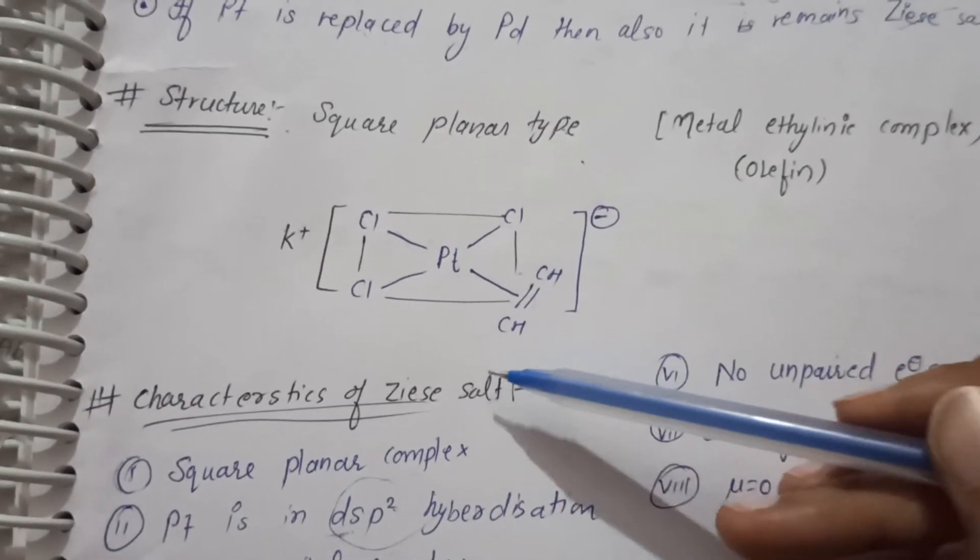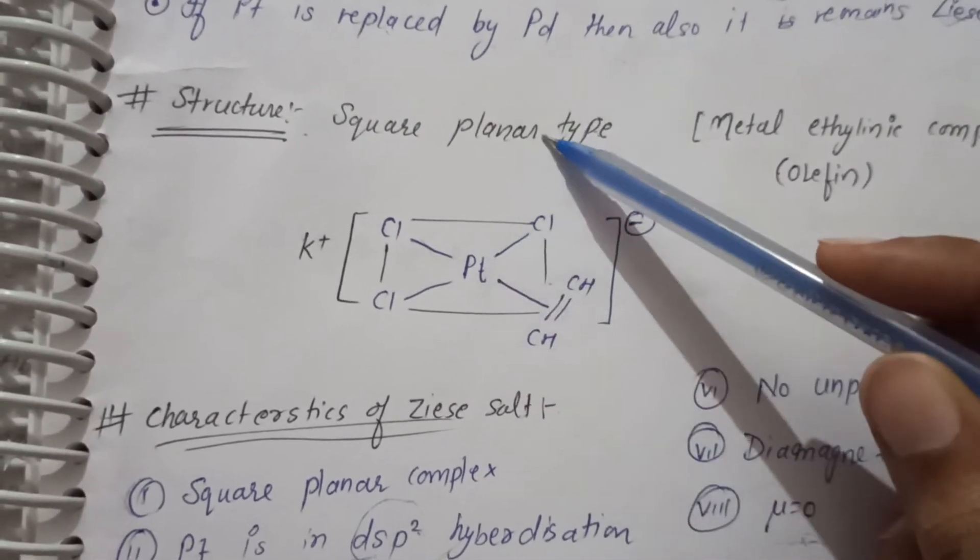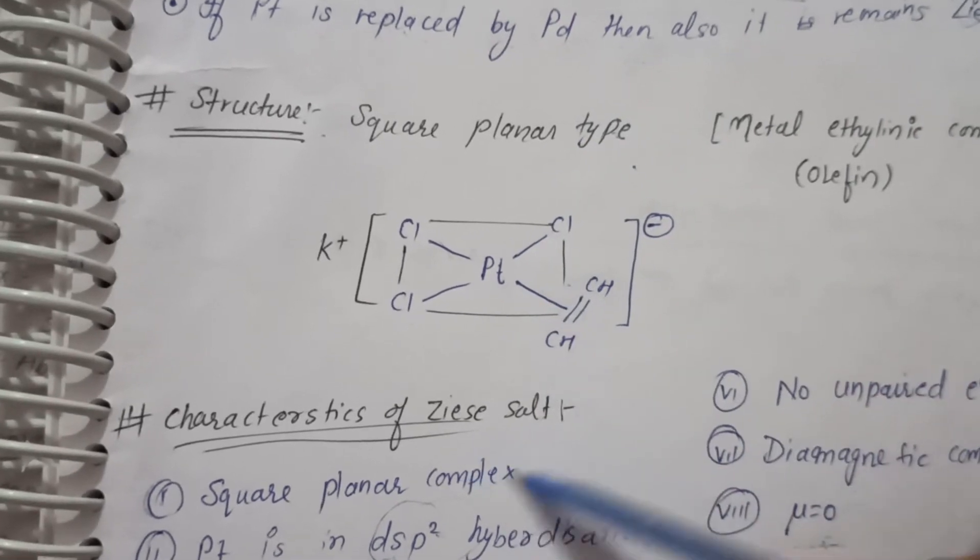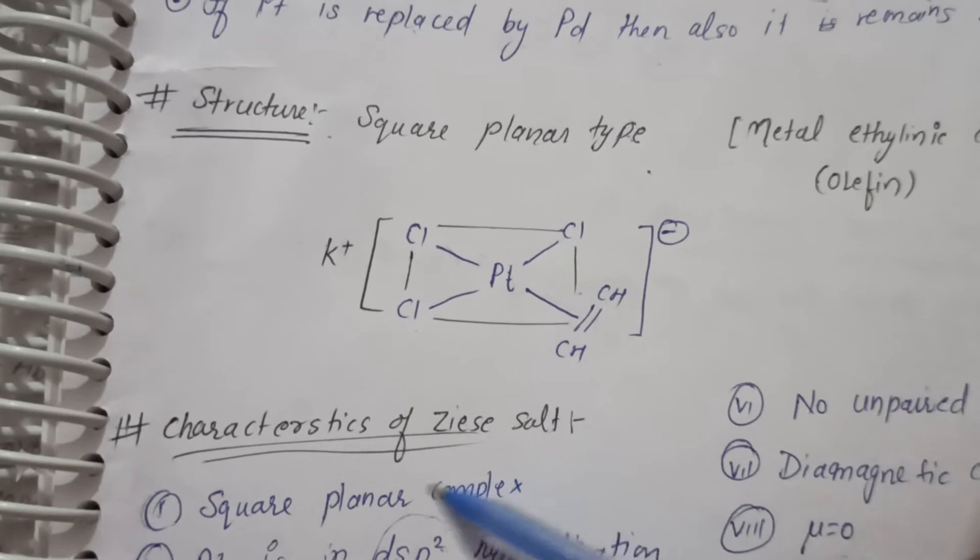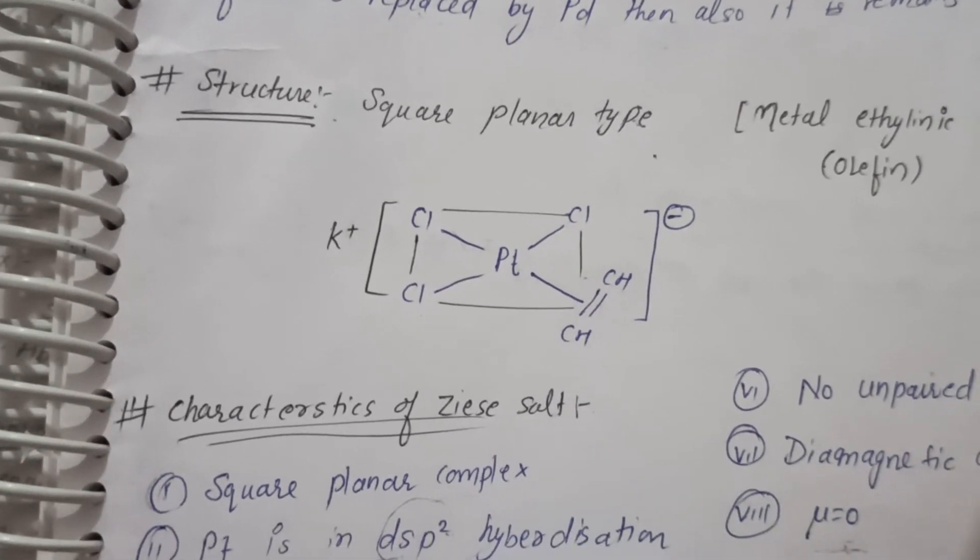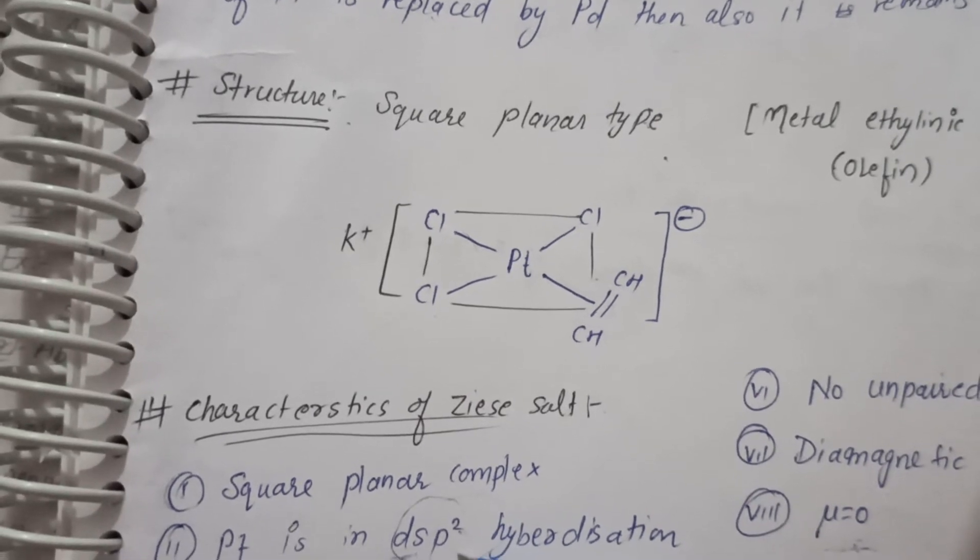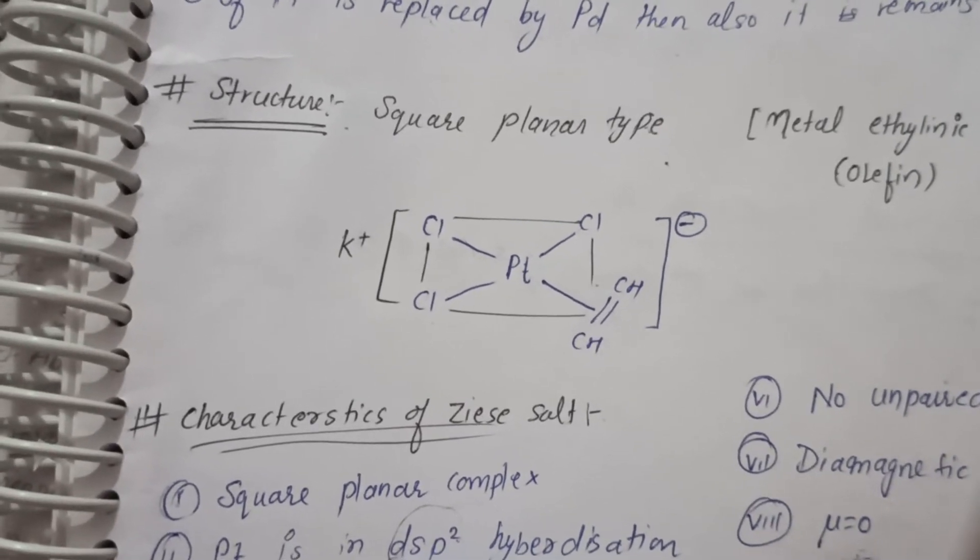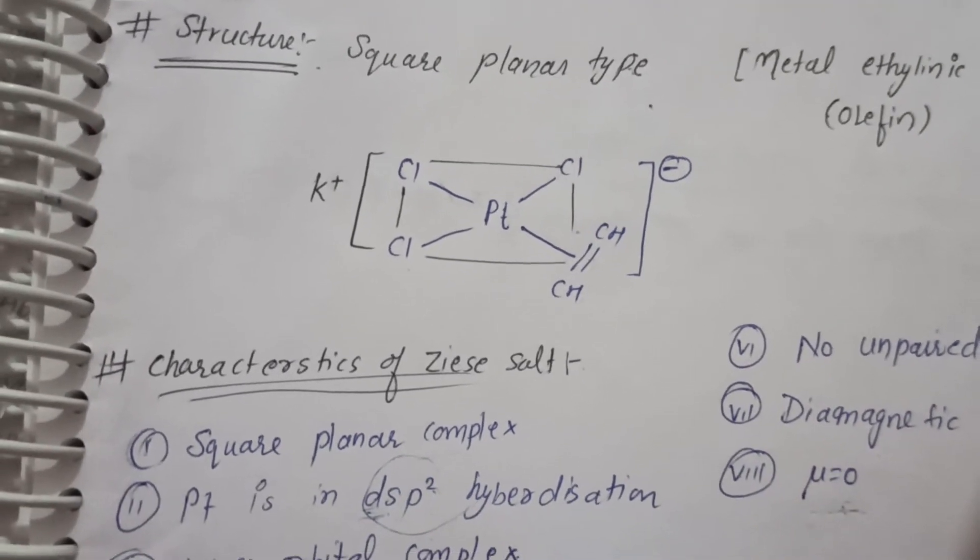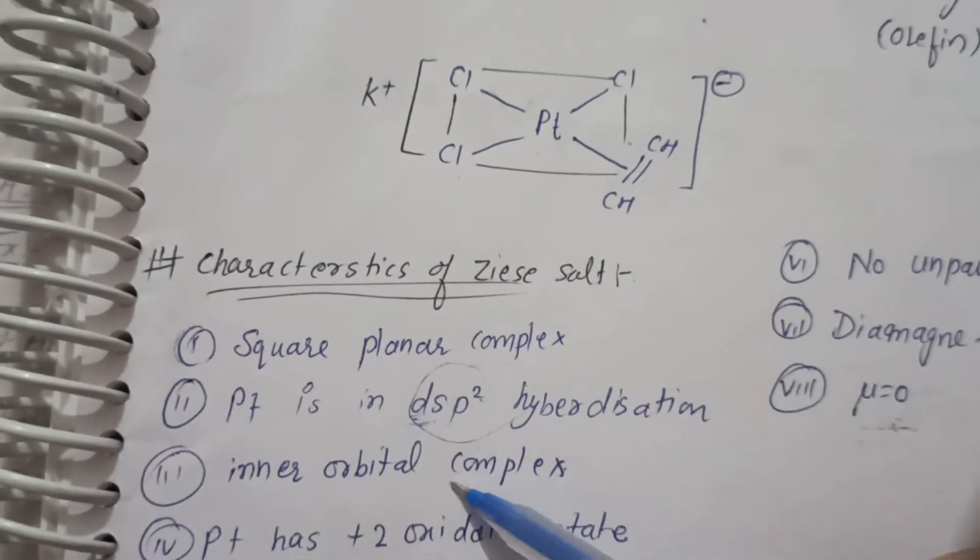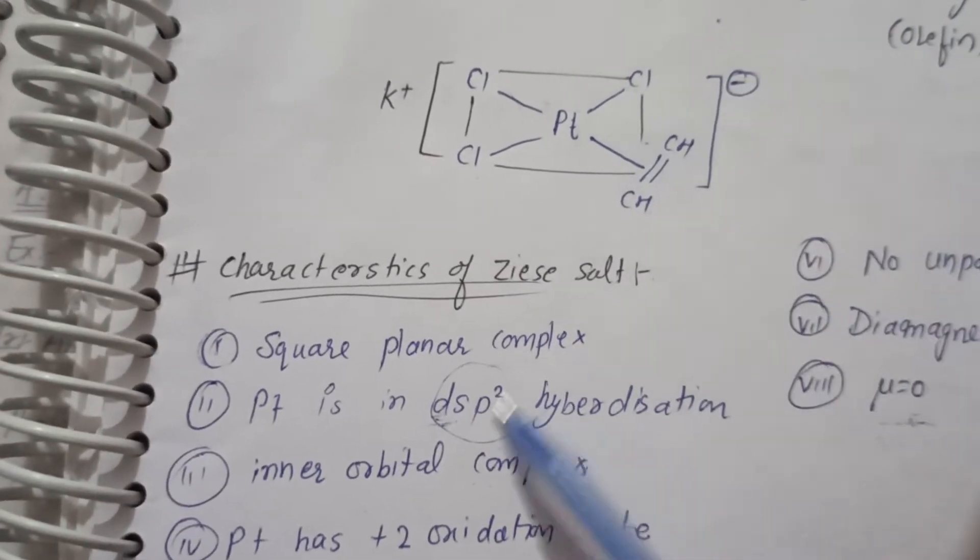These are the characteristics of Z salt. You have to tell that this is square planar type complex. If that is square planar, this is dsp2 hybridization. When dsp2 hybridization is made possible, that is under the inner orbital complex. Platinum is in +2 oxidation state, so this is the characteristic.